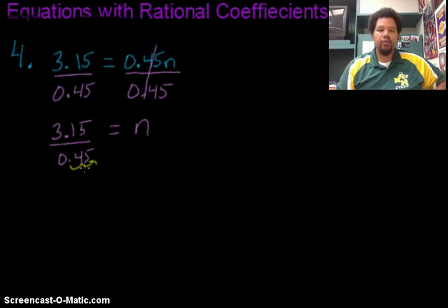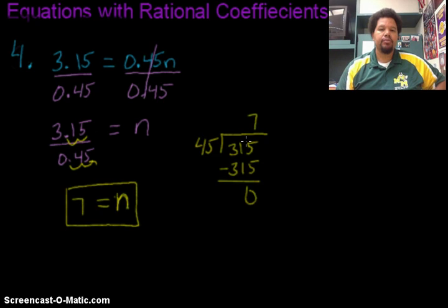And however many times I move it over for the bottom, I have to move it the same number of times for the top. So my new problem is 315 divided by 45. And so now I go ahead and do my division, which gives me seven. So n equals seven or seven equals n.